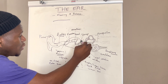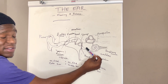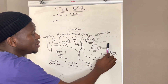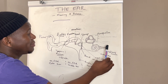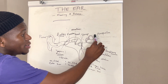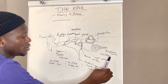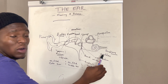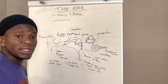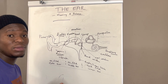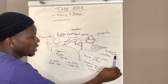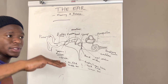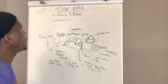The ossicles are attached to the oval window, and below the oval window we have the round window, which serves as an exit. We also have the Eustachian tube, and the semicircular canals which contain the receptors — the maculae and the cristae — specifically the ampullae, utricle, and saccule. We also have the cochlea, which looks like a snail, and inside it are the organs of Corti, responsible for converting stimuli in the form of pressure waves into nerve impulses. The auditory nerve transmits those nerve impulses to the brain.